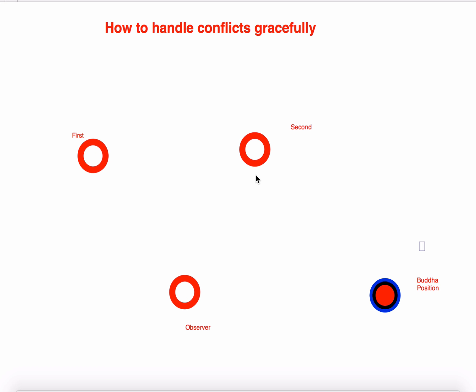Now you are in the second position. This position represents the person with whom you are having the conflict. Sit in the chair and imagine the situation from the perspective of the second person — how that other person is feeling. When you sit in the chair, behave like the other person. Let all the thoughts come. Think and feel like the other person. Take your time and once you are done, get up from the chair and go to the third chair.